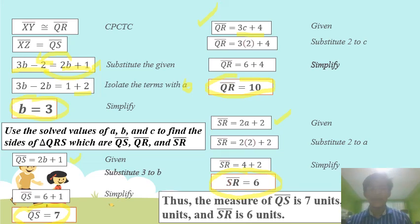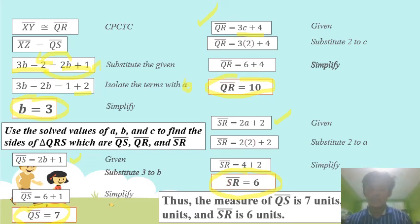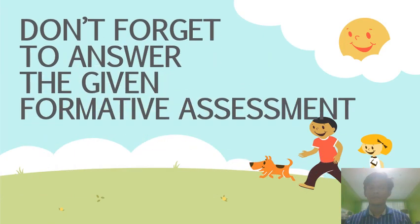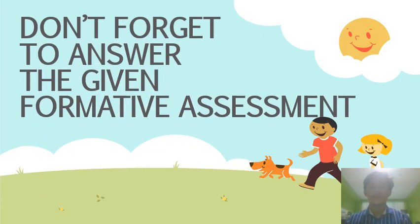Therefore, the measure of segment QR is 10 units, while segment SR is 6 units. Please take note of everything, and don't forget to answer the given formative assessment. Thank you for listening.